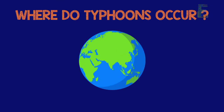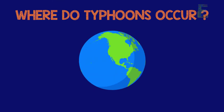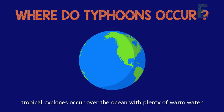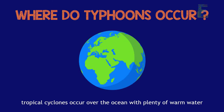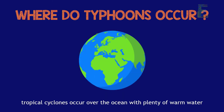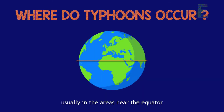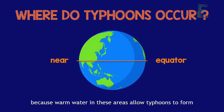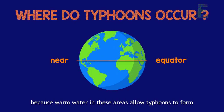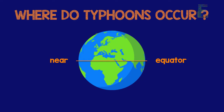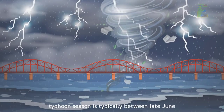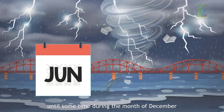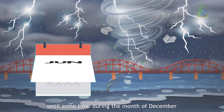So where do typhoons occur? Tropical cyclones occur over the ocean with plenty of warm water, usually in areas near the equator, because warm water in these areas allows typhoons to form. Typhoon season is typically between late June until sometime during the month of December.